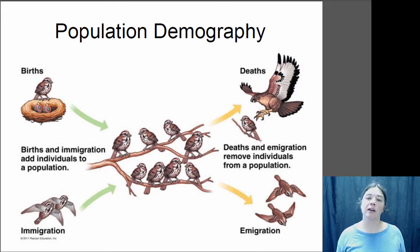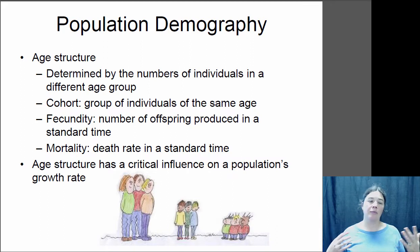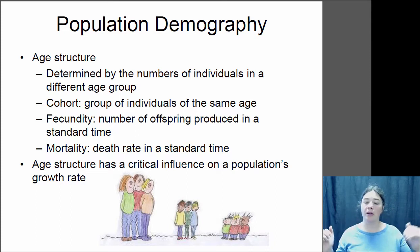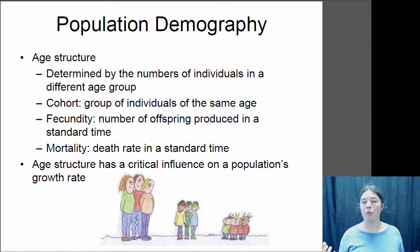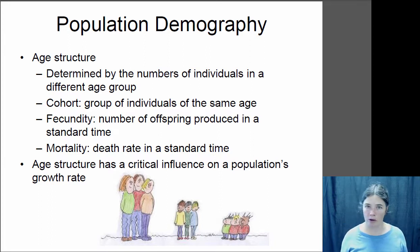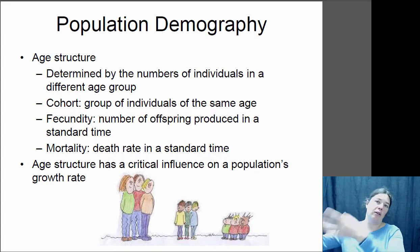The birth rate is influenced by the age structure of the group. When looking at a particular population, you often want to break it up into different cohorts. A cohort is basically a group of organisms that are approximately the same age. If we were looking at humans, for example, you might consider all first graders a cohort, and you could follow that cohort through time — first grade, second grade, third grade, etc.